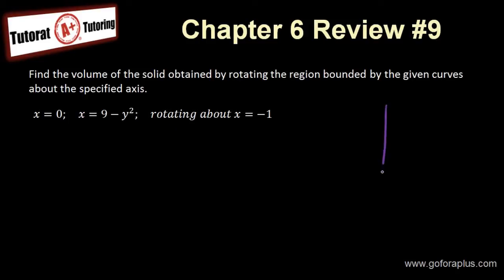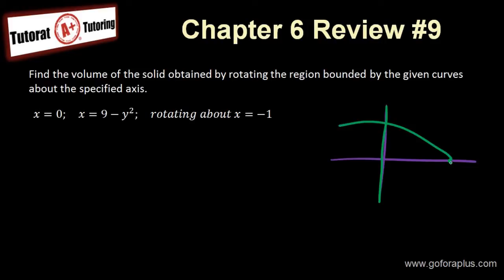So let me draw this out first. I have x equals to 0 here, and I have x equals to 9 minus y squared. So 9 must be somewhere here, and then minus y squared should look like a parabola. So the region bounded by these two functions would be this area.